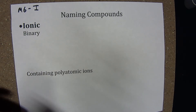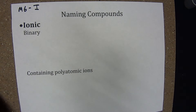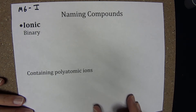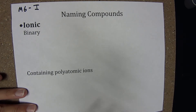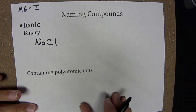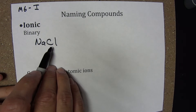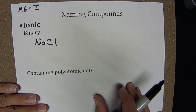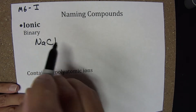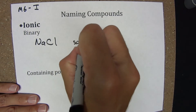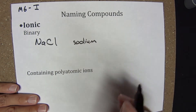We'll begin first with binary ionic compounds. As the name implies, these are compounds that consist of two elements — one cation and one anion. A common example would be sodium chloride. To name the compound, I simply name the ions involved. The cations tend to be metals, and in naming the compound I simply name that metal: sodium.